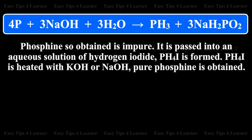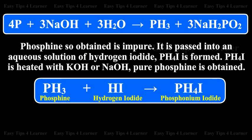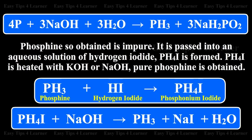Phosphine so obtained is impure. It is passed into an aqueous solution of hydrogen iodide, forming PH4I. PH4I is then heated with KOH or NaOH to obtain pure phosphine. The reactions are: PH3 + HI gives PH4I; PH4I + NaOH gives PH3 + NaI + H2O.